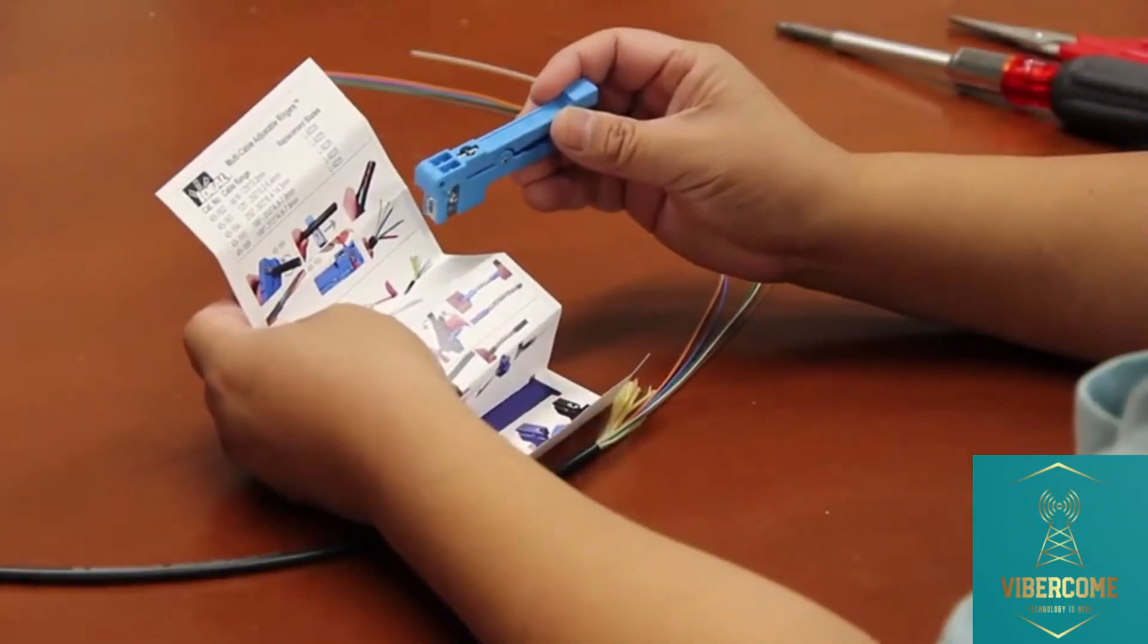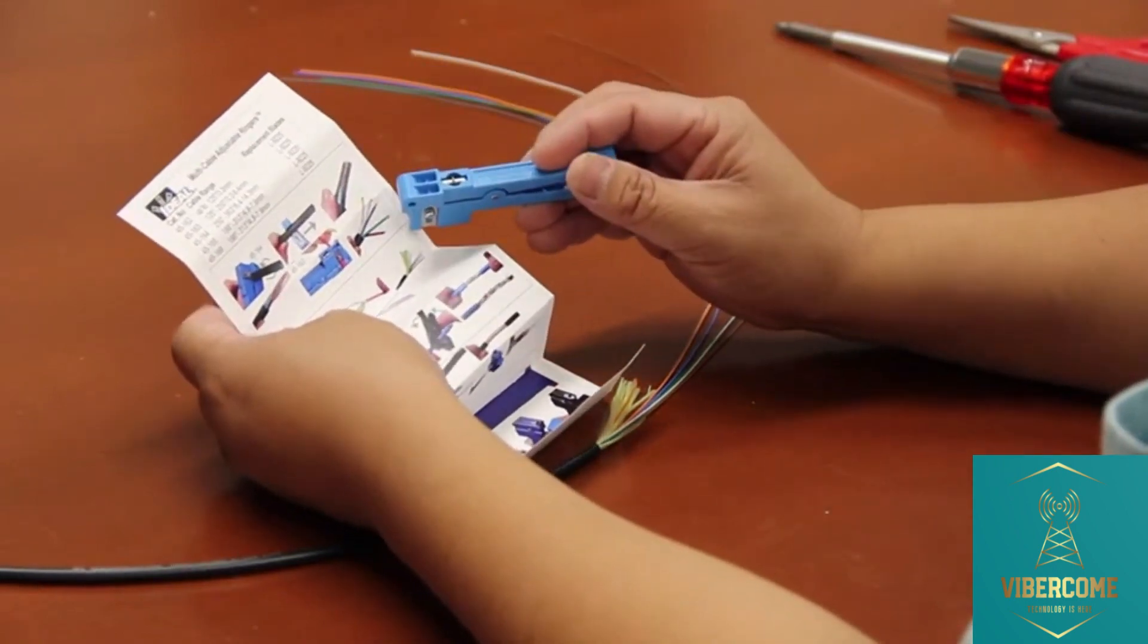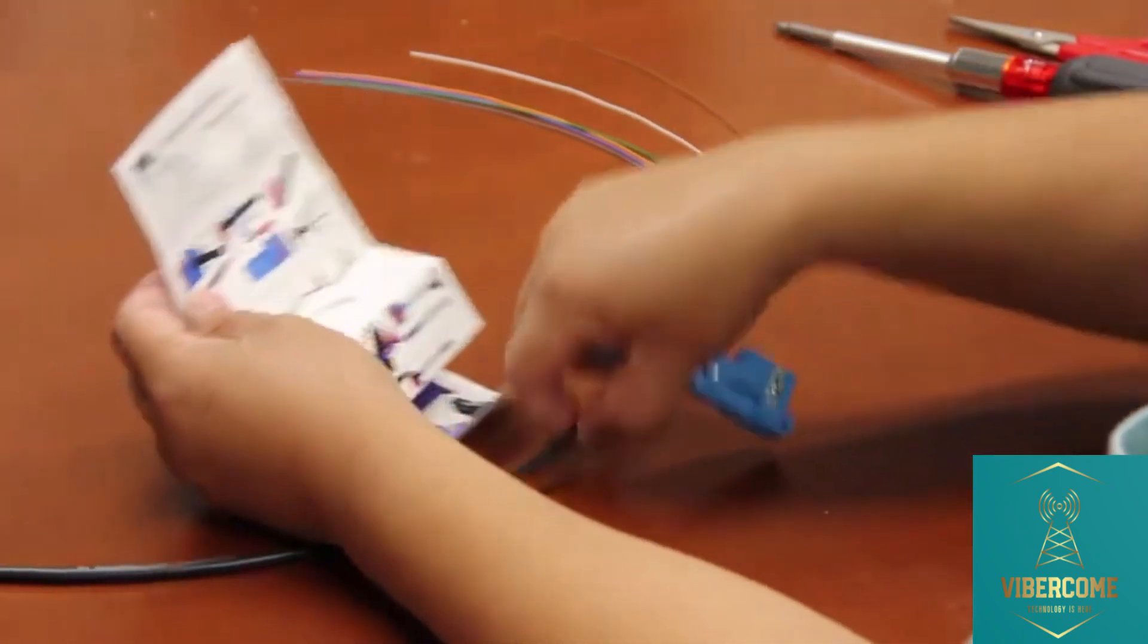This is Ideal Industries 45-163 Multi-Fiber Buffer Tube Stripper. It can strip buffer tubes from 3.2 to 6.4 millimeters in diameter.